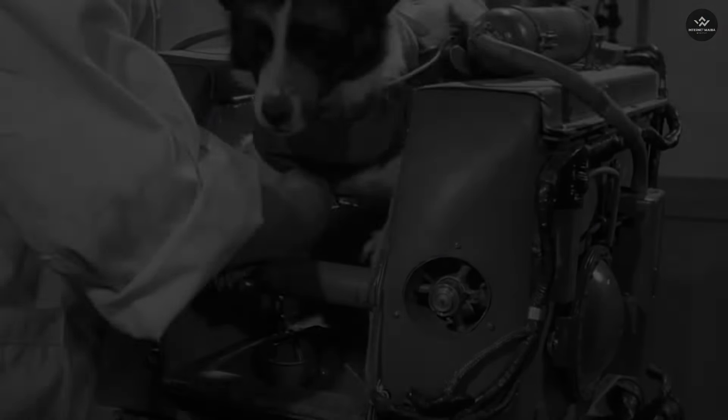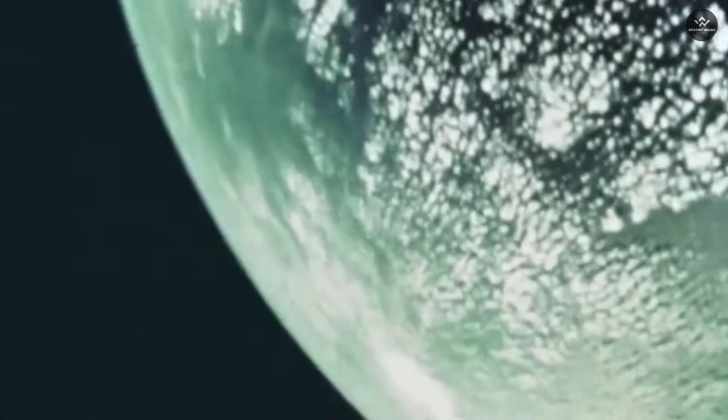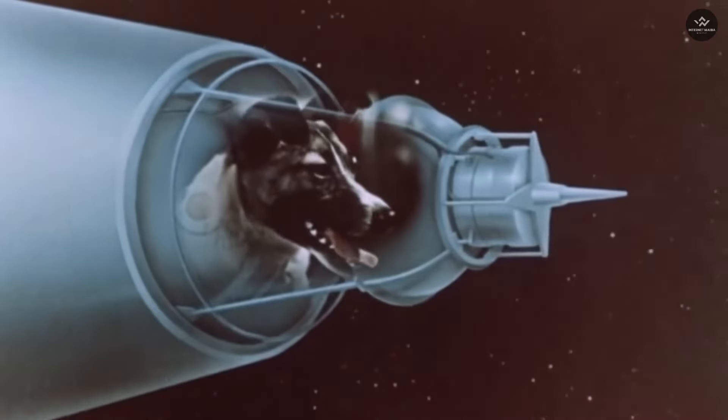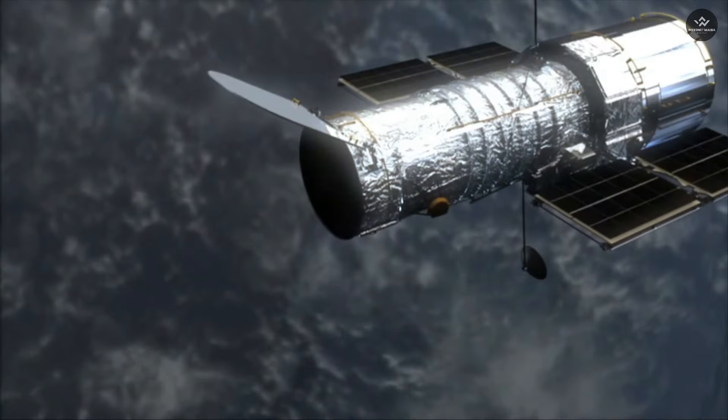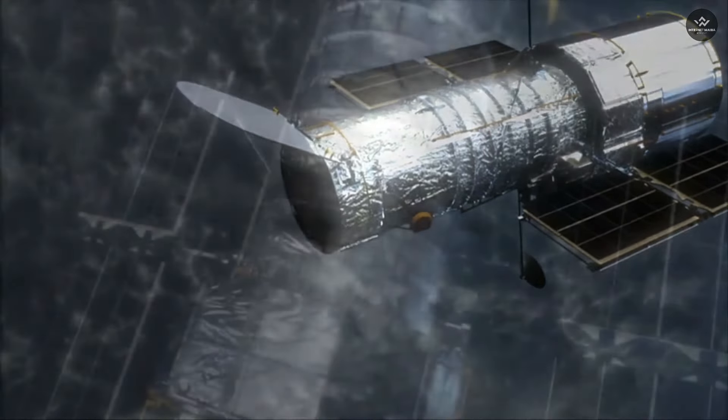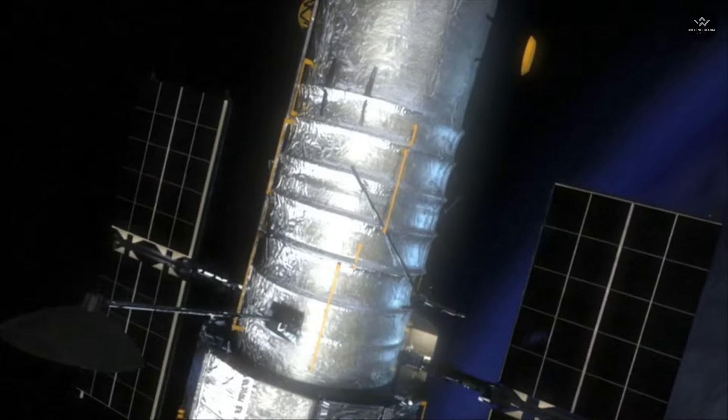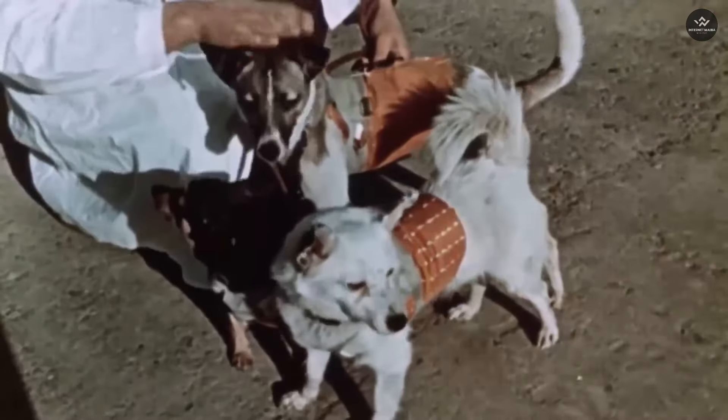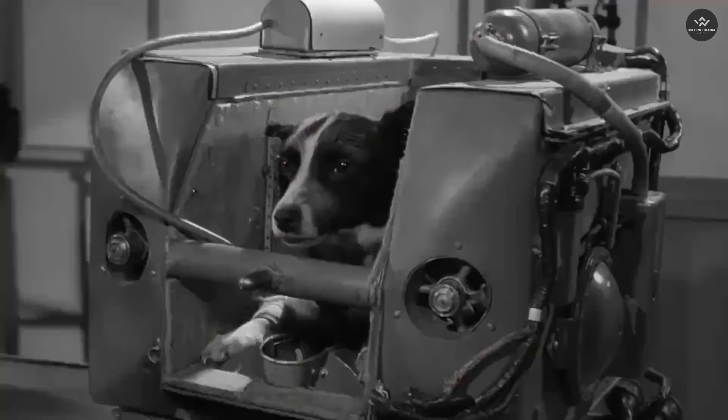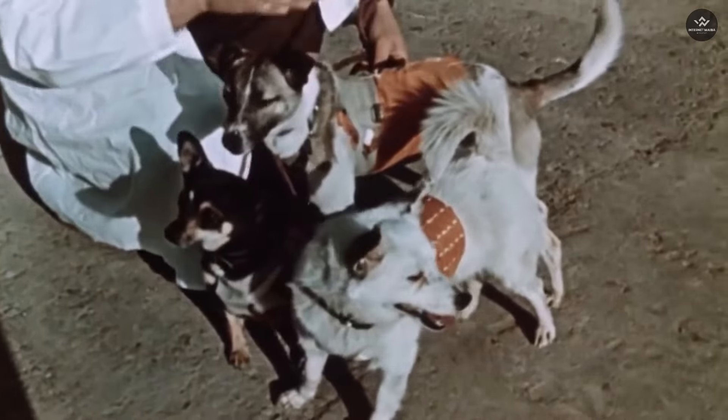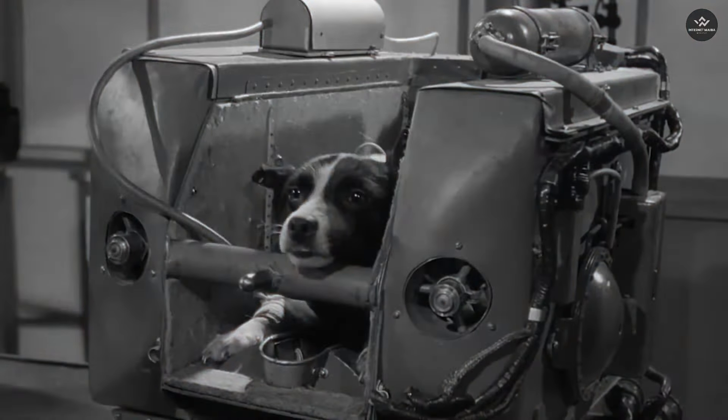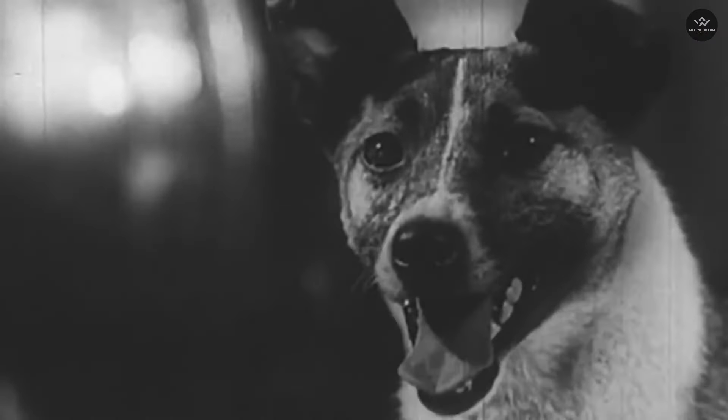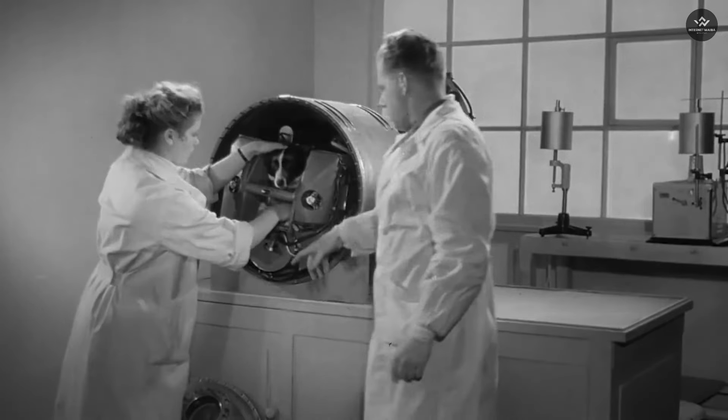Laika was the first animal to orbit Earth in space. In 1957, the Soviet Union launched Laika into space as part of their space program. At that time, technology was not advanced enough to safely return from space. Scientists knew Laika would not survive, so they prepared the rocket with sensors and food for the journey.